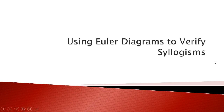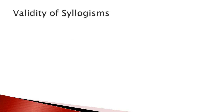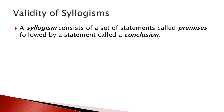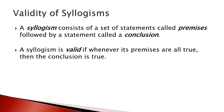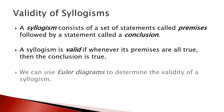Hello, today I'm going to talk about using Euler diagrams to verify syllogisms. A syllogism consists of a set of statements called premises followed by a conclusion statement. The syllogism is valid if whenever its premises are all true, then the conclusion is true. We can use Euler diagrams to determine the validity of a syllogism.